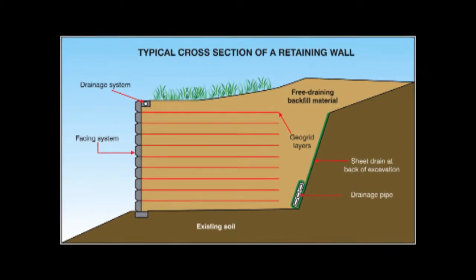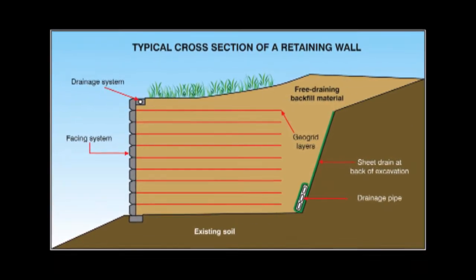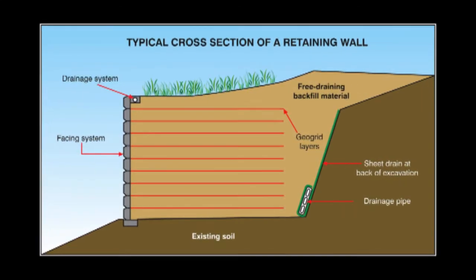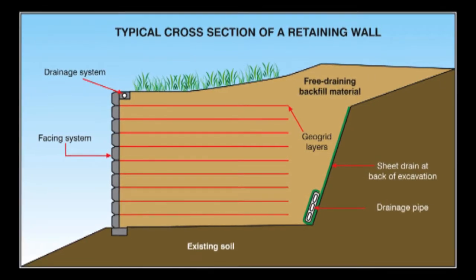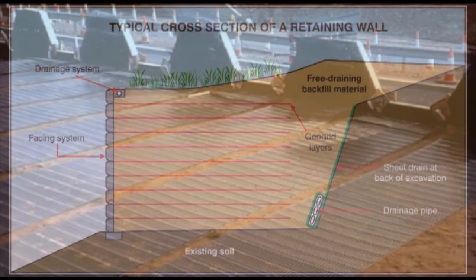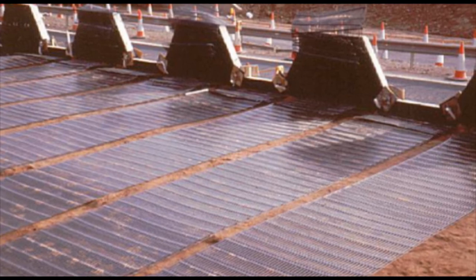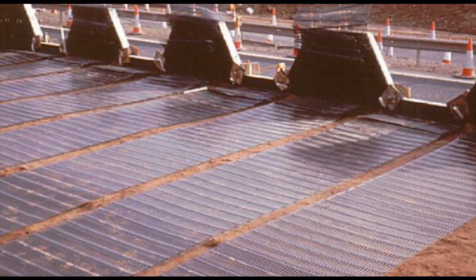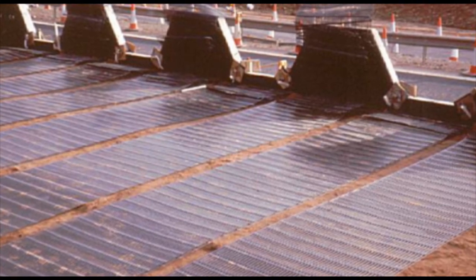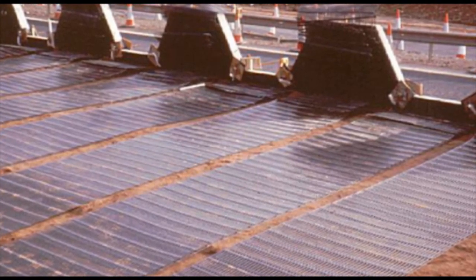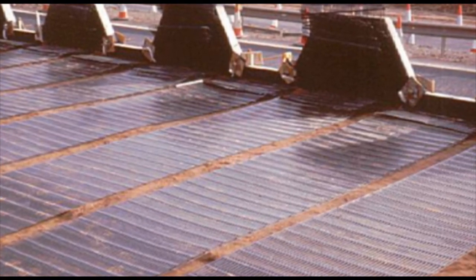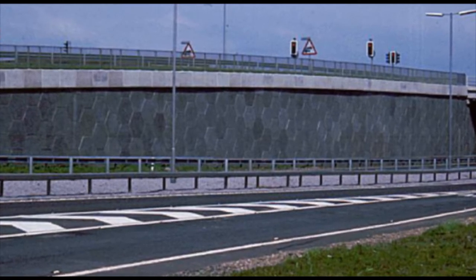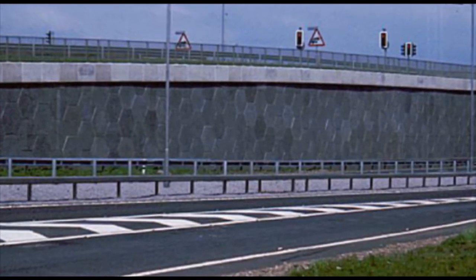Here is a typical cross section of a geosynthetic reinforced retaining wall. Geogrids are used in horizontal planes. They are connected to the wall face and interact with the soil to hold the wall in place. Here are the geogrid layers during construction — they are connected to the wall face and extend back into the soil. The distance the geogrid extends back into the soil is one of the key parameters of the overall system design. Note also that adjacent rolls are not required to overlap. In a completed structure, the geogrid cannot be seen, as it is buried in the soil behind the wall face.